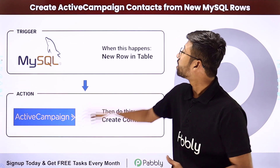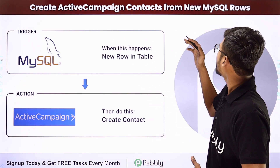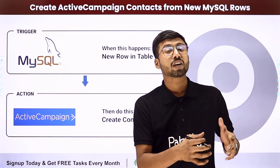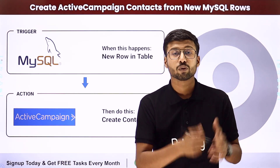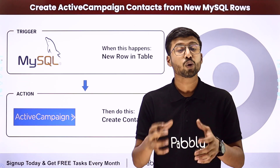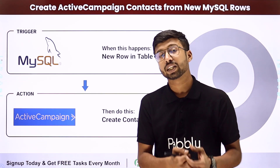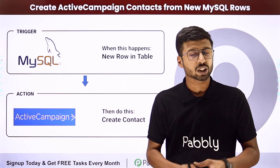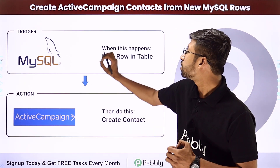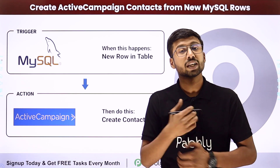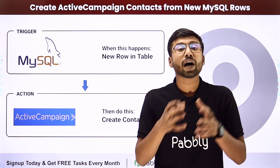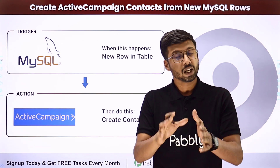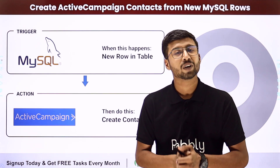In this video, we are going to learn how to create ActiveCampaign contacts from a new MySQL row. Suppose you are using ActiveCampaign as an email marketing application for your business and you are getting new lead details or contact details from various sources, adding them into your MySQL database. You want to add those people as contacts in ActiveCampaign, and this automation is going to help you a lot.